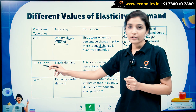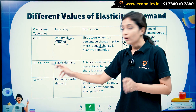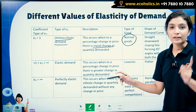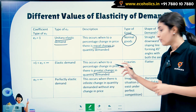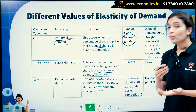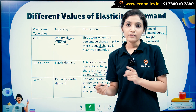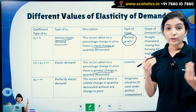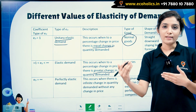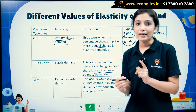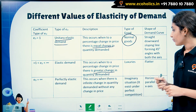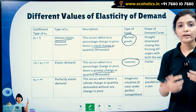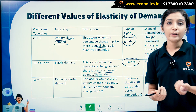When the elasticity of demand lies between 1 and infinity, this occurs when, to a percentage change in price, there is a greater change in the quantity demanded. The quantity demanded changes by a larger percentage than the price. So if the price increases by 10%, the quantity demanded falls by 20%. In this case, the demand is elastic. An example of this would be luxury goods — if the price of luxury goods rises, people will postpone their purchases.